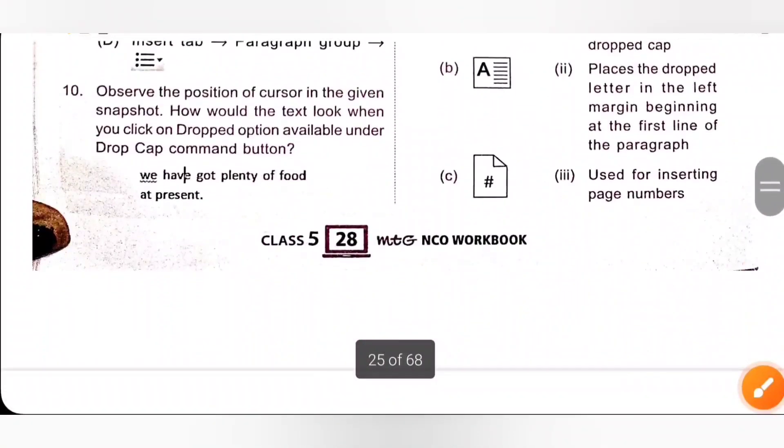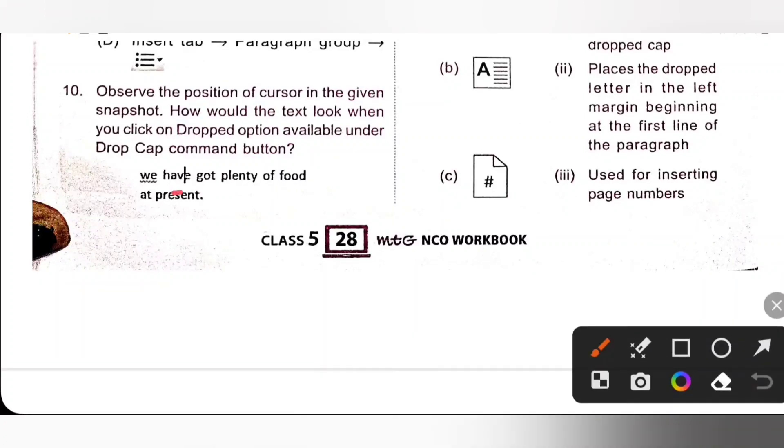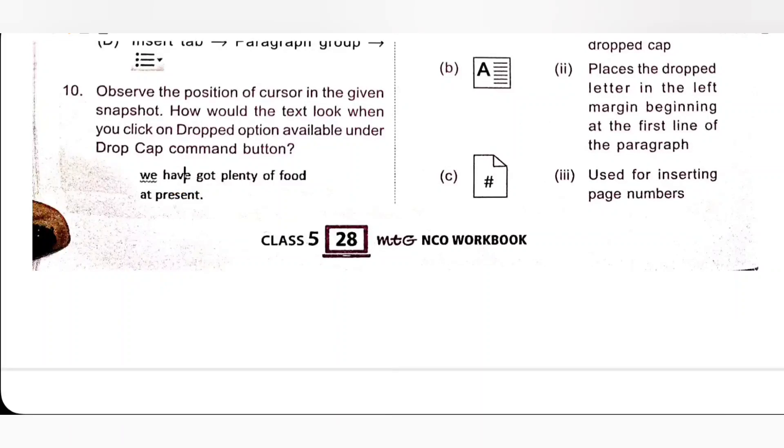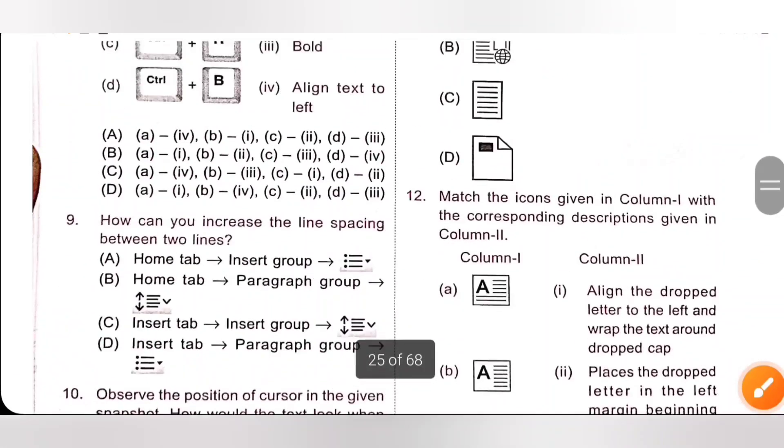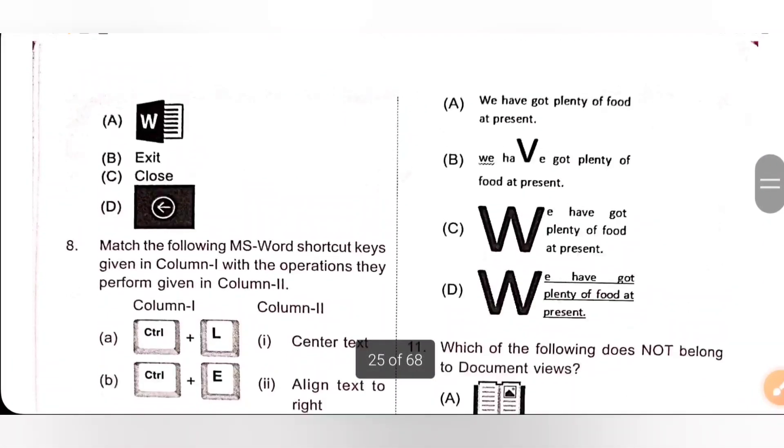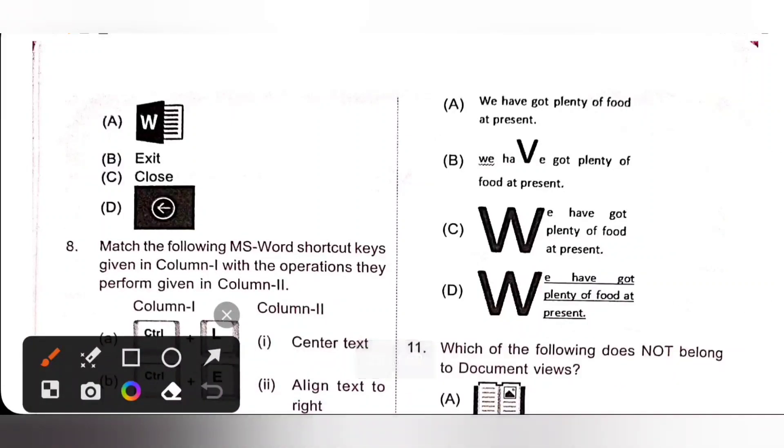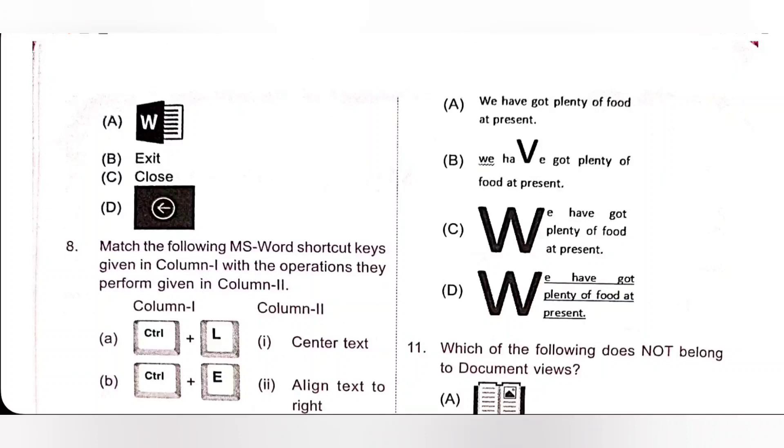Tenth one, observe the position of cursor in the given snapshot. How would that text look when you click on dropped option available under drop cap command button? So drop cap command creates a large capital letter at the beginning. It will create a large capital letter at the beginning, no matter where the cursor is. So option C is the correct answer. It creates a large capital letter at the beginning and no matter where the cursor is. So option C.